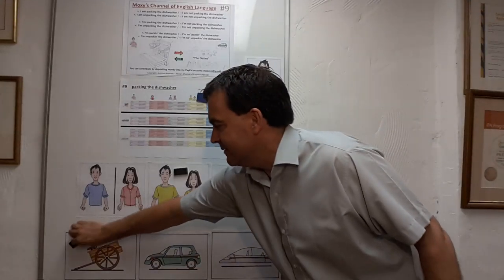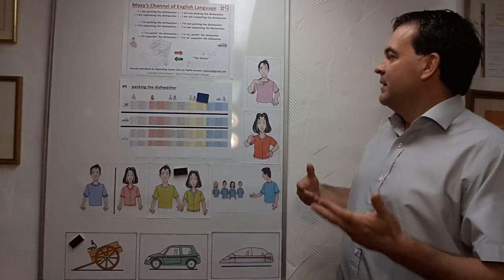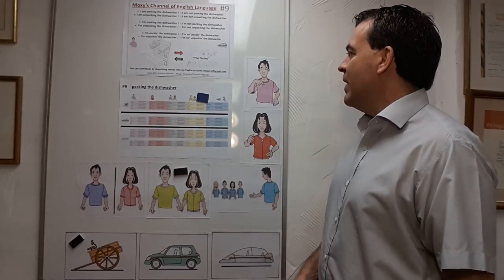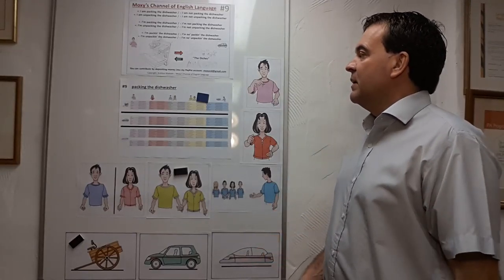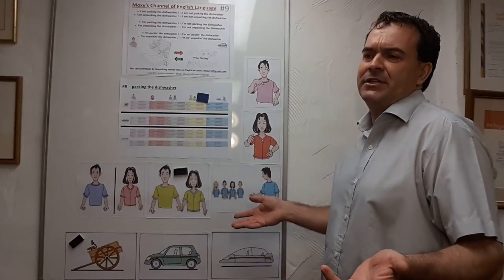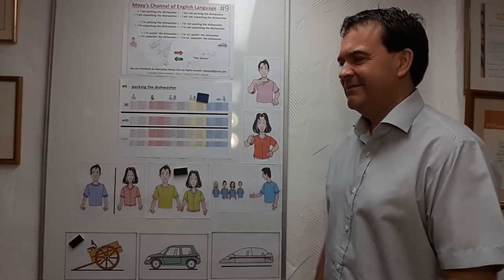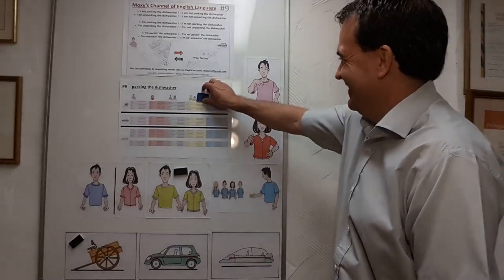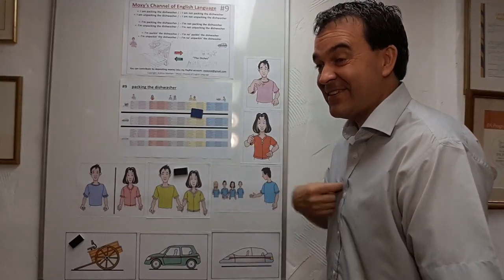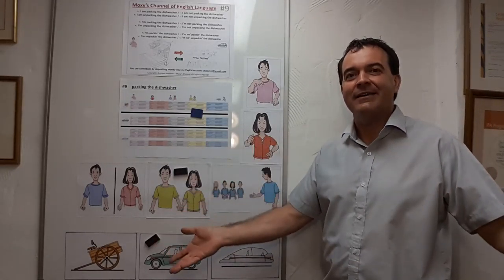We. Past tense. We have packed the dishwasher. We have not packed the dishwasher. We've unpacked the dishwasher. We haven't unpacked the dishwasher. That's normal around here — I get the job of unpacking the dishwasher. People pack it, put their plate in, then I have to unpack it.